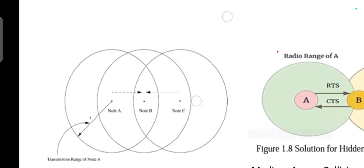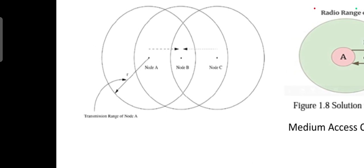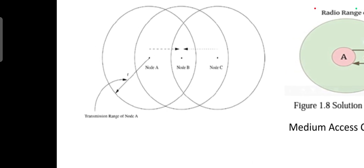You can see the example figure where arises a hidden terminal problem. In this figure, we are having three different nodes: node A, node B, and node C.